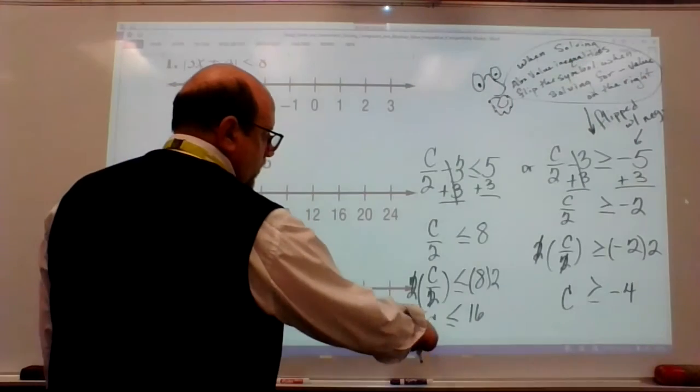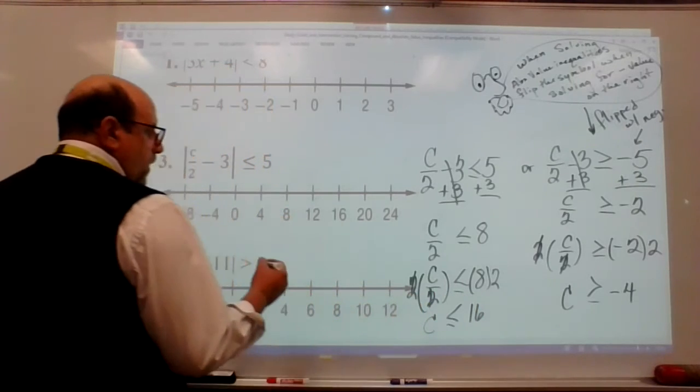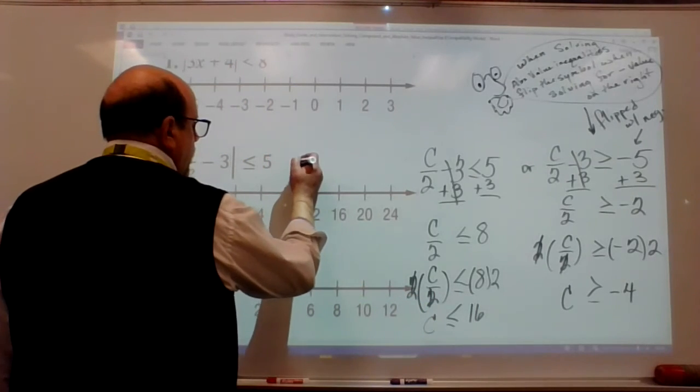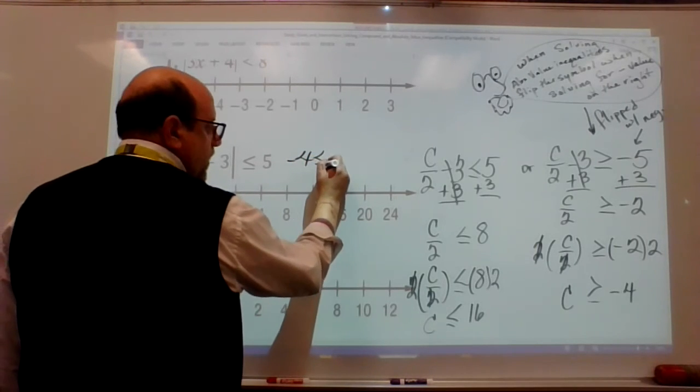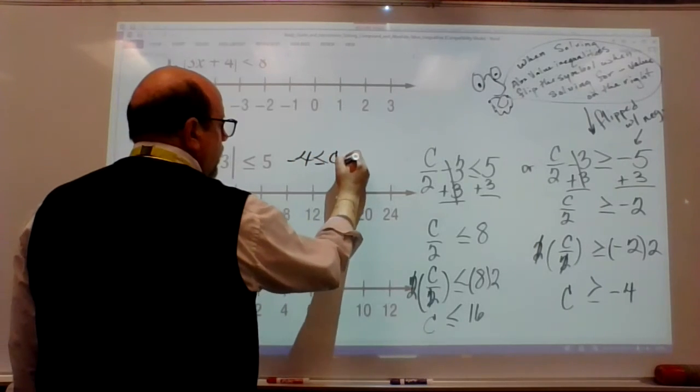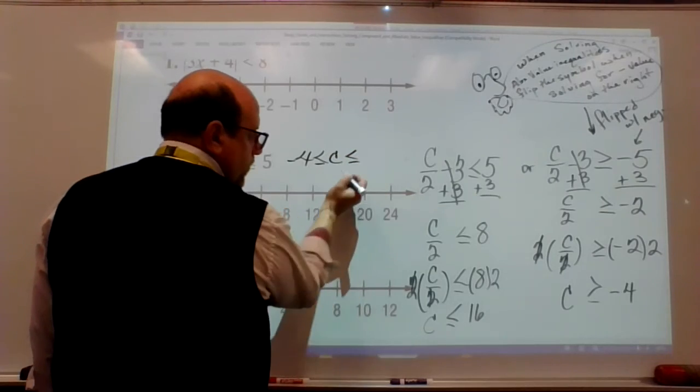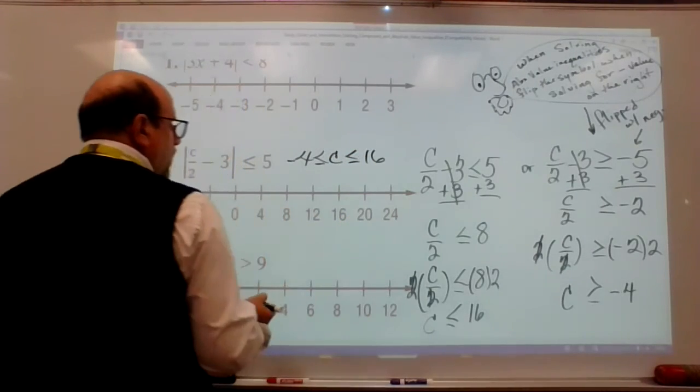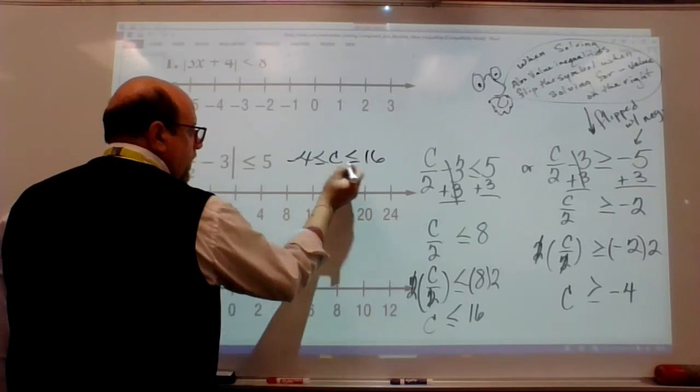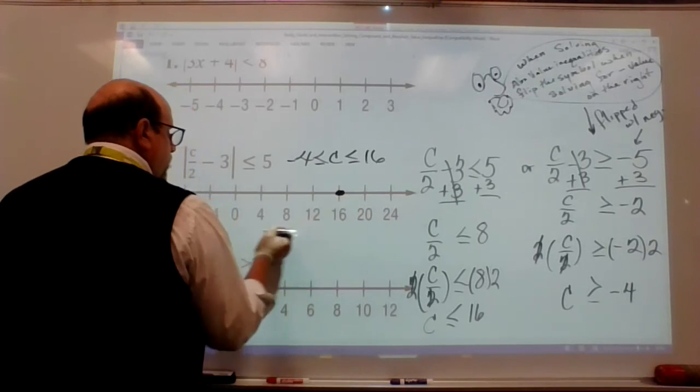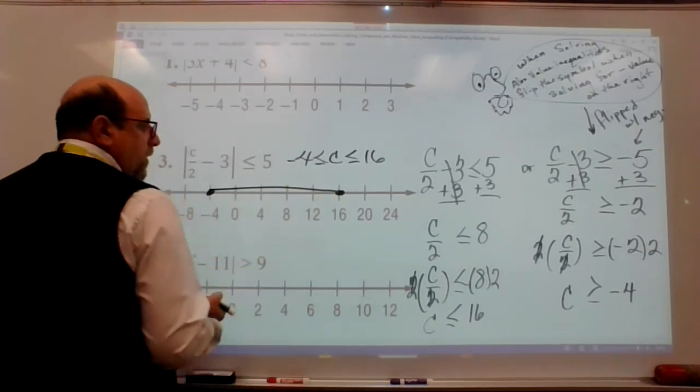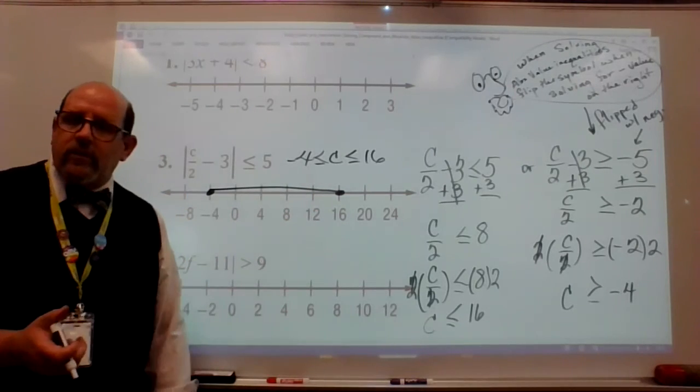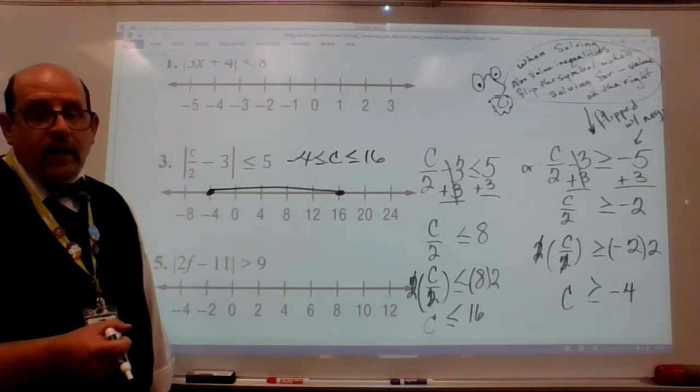Look. All right. So this ends up being -4 ≤ c ≤ 16. Look at that. And it contains equal signs so I can put closed circles in. It worked out. That's it. It's that easy.